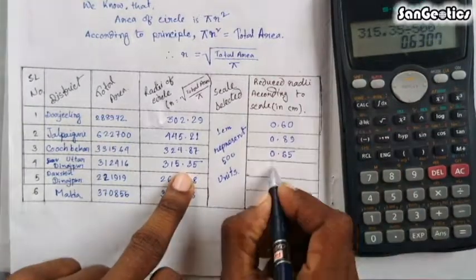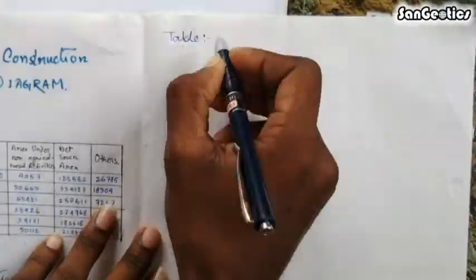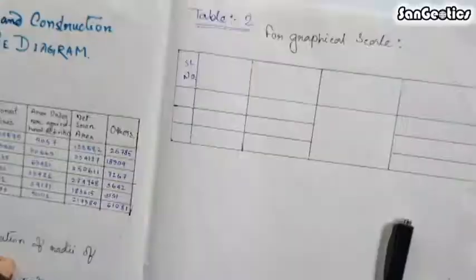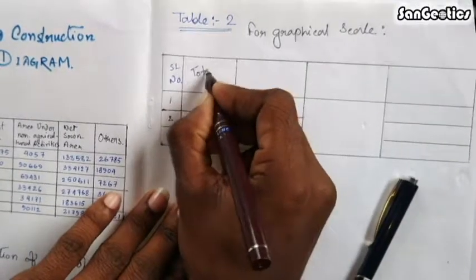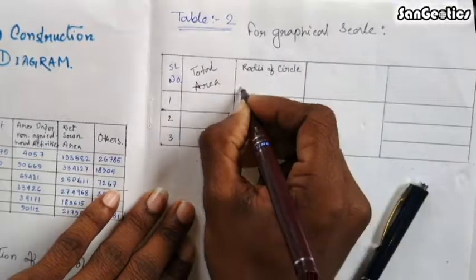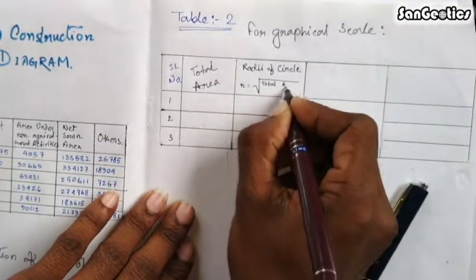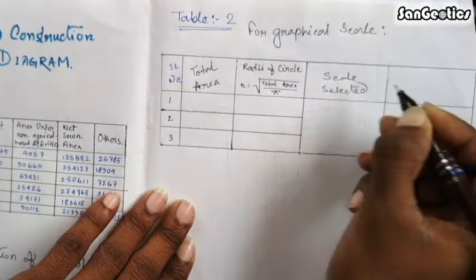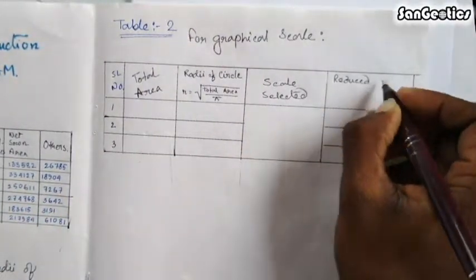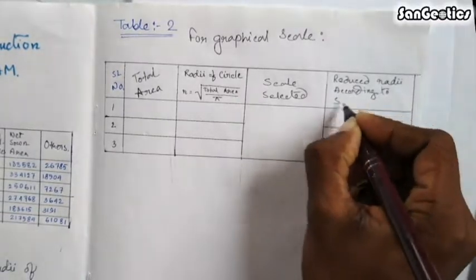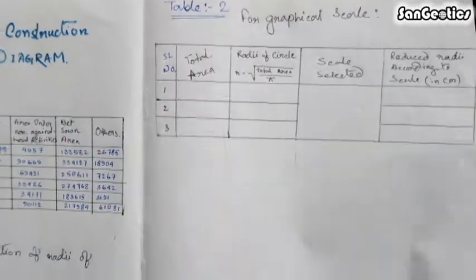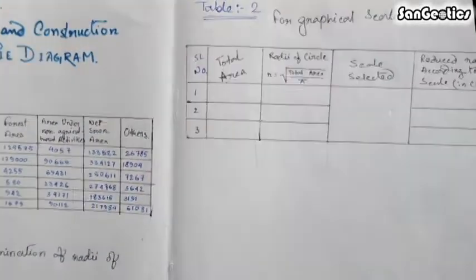With the help of a calculator, construct Table 2 for the graphical scale, similarly as above. Serial numbers one, two, and three represent highest, medium, and lowest. The next captions are total area and radius of circle r = √(total area / π), then scale selected and reduced radius according to scale in centimeters.